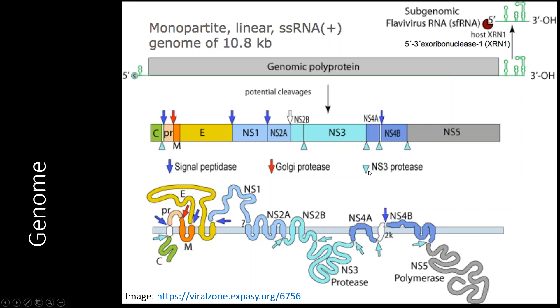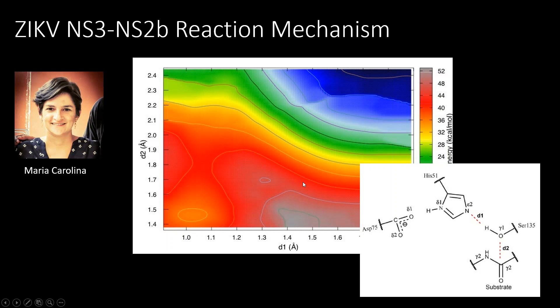Two key targets here are the NS3 protease and the NS5. We've used hybrid QMMM calculations to understand the reaction mechanism of the Zika virus protease, which would allow us to search for better compounds that mimic the transition state of the reaction.